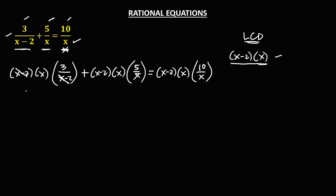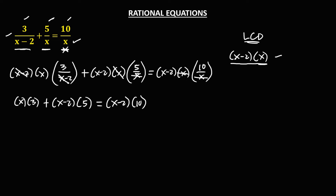Then simplify. We can cancel x minus 2, so we have x times 3. Then plus, we can cancel x, so that's x minus 2 times 10. Then simplify: this is 3x, then plus, multiply, that's 5x, then negative 2 times 5, that's negative 10, then equals x times 10, that's 10x, and negative 2 times 10, that's negative 20.